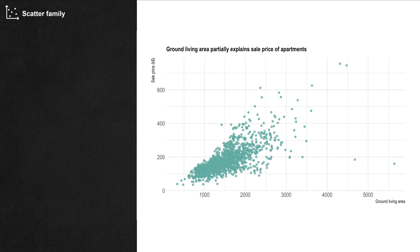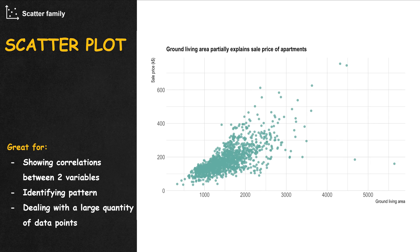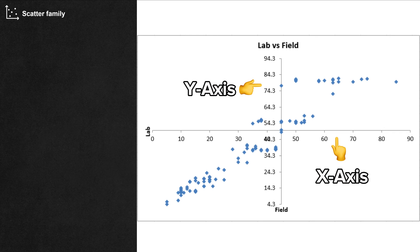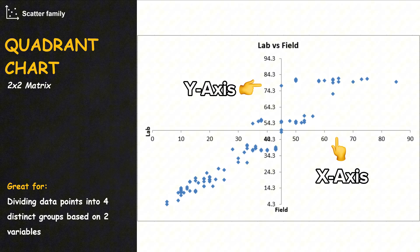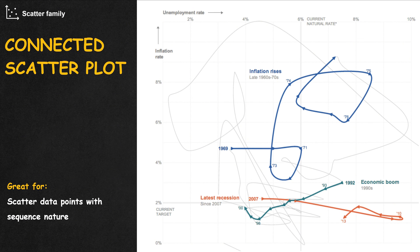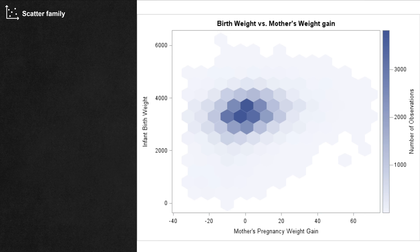When you have multiple independent data points with two numerical variables and plot each of them as a dot on the x and y axes, you have a scatter plot, and a whole new family of variations. When the two axes are placed in the middle instead of on the left or bottom, we have the quadrant chart or the 2x2 matrix. When the dots on a scatter plot have a sequence nature, we can connect them — that is the connected scatter plot.